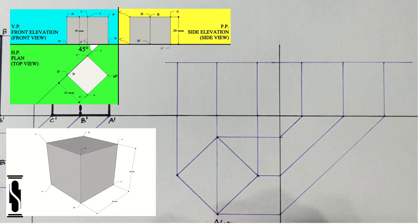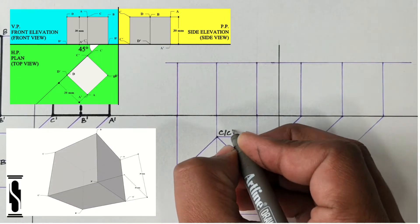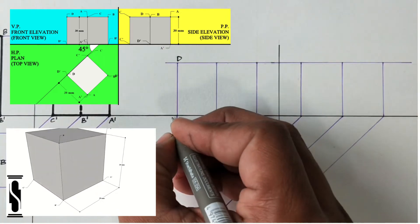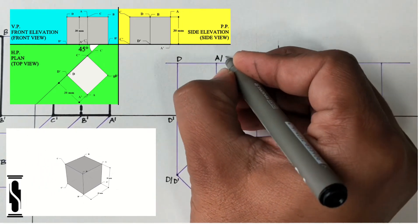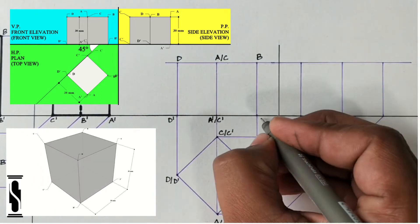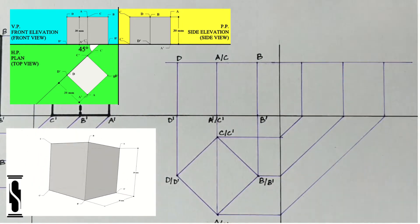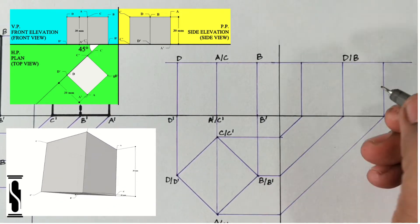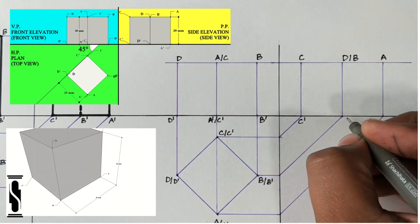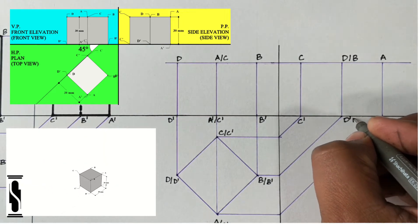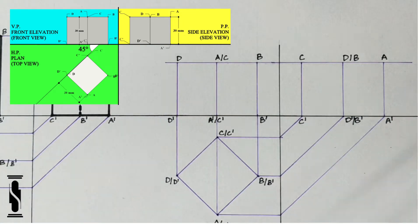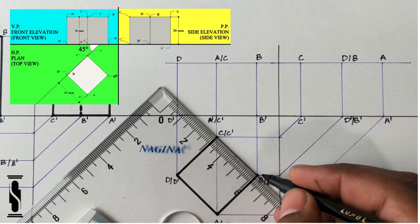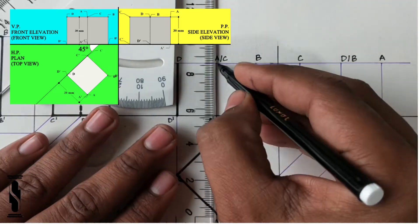In the top view, name the upper square base as A, B, C, and D, and the lower base as A, B, C, and D. You can write it as A oblique A, B oblique B, C oblique C, and D oblique D, which represents that the lower points are hiding below the upper points. With a similar concept, complete the nomenclature of the front view and side view. Now, dark the final output with the thick line and complete the answer with the proper dimensions and nomenclature.